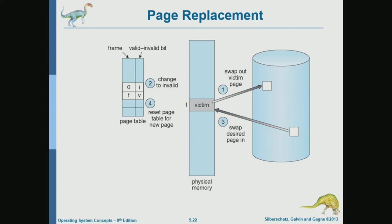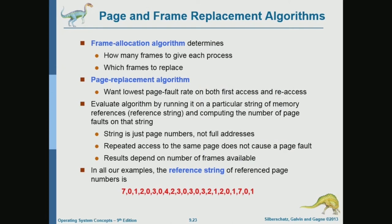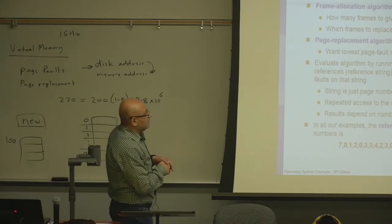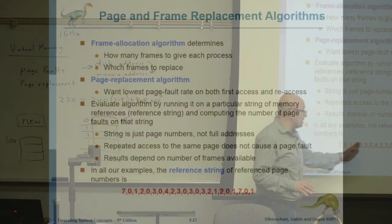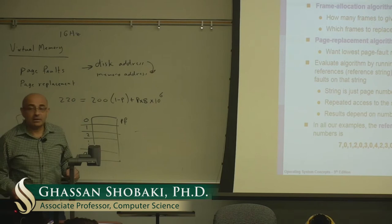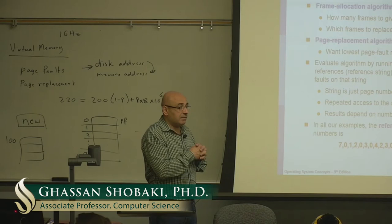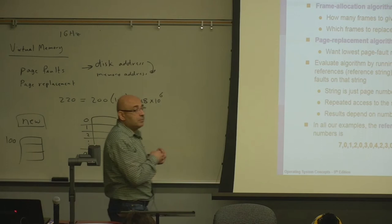Let's look into page replacement policies, and we'll study them using this example. This string is a reference string — just a sequence of pages the program is accessing. We don't care about offsets within the pages because we are working at the page level. Our references from a page replacement point of view are abstracted by the page number.